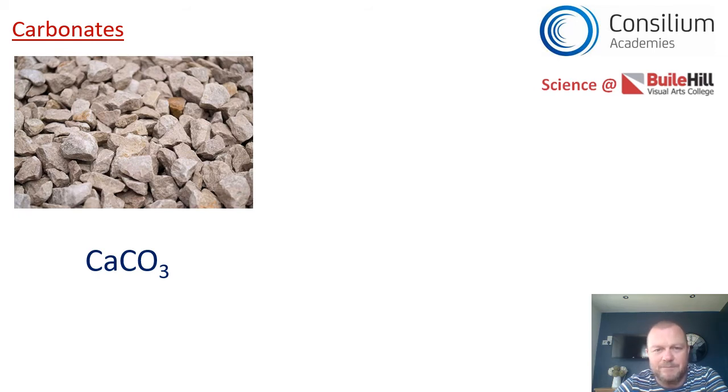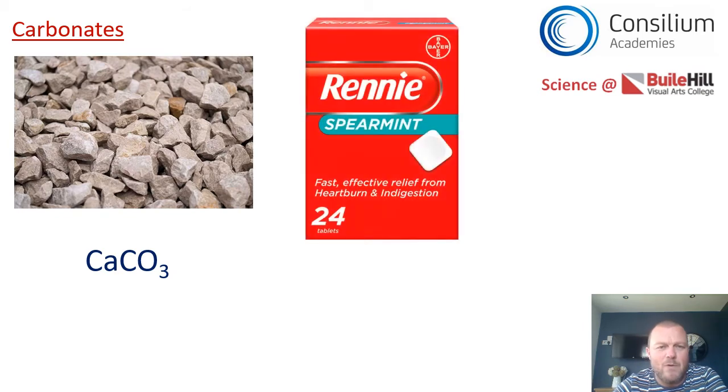Another example of a carbonate might be Rennies. Rennies are the kind of tablets that sometimes people take when they've got heartburn. Rennies have an awful lot of calcium carbonate in them, but they also have another carbonate in there called magnesium carbonate. If you look at the symbol, that Mg is the magnesium and that CO3 again is the carbonate bit.